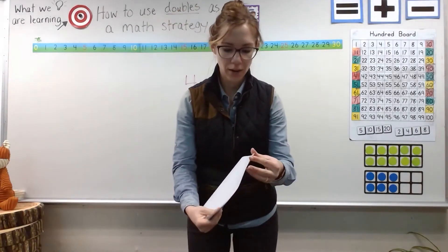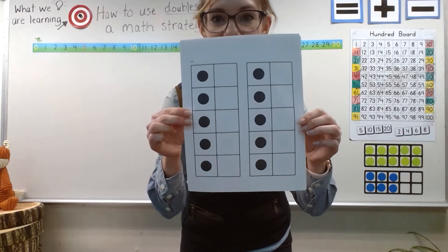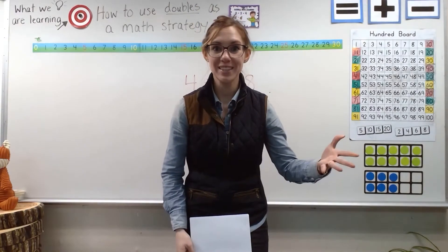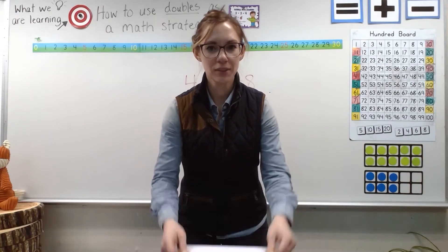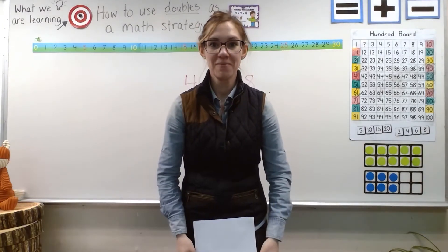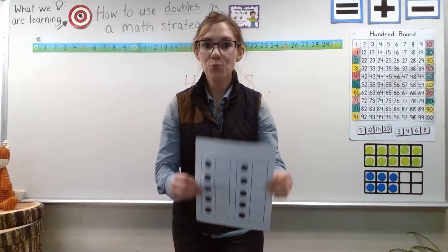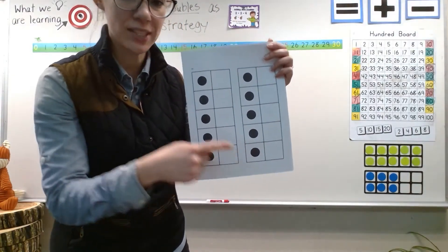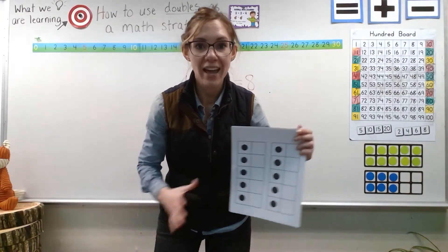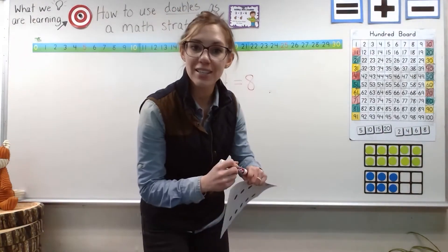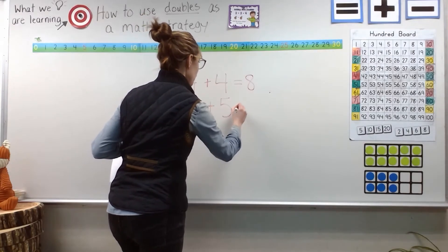Okay, here comes your next quick look. You guys are going to have to be super quick now. What did you see this time? It was a little different, wasn't it? Do you need another quick look? How many dots are on the 10 frame this time? Right, we saw five on one 10 frame and five on the other. And we know that five plus five equals 10. So we could write that one also as a number sentence: five plus five equals 10.